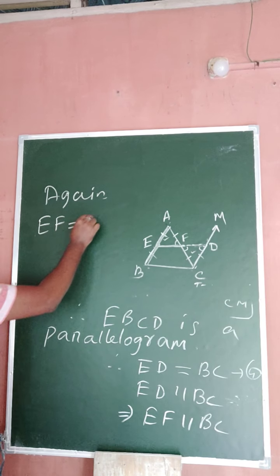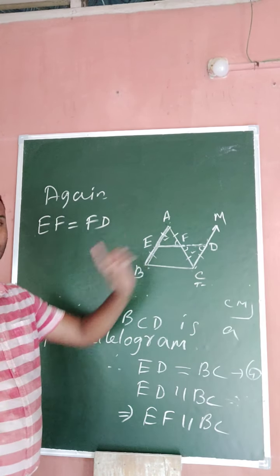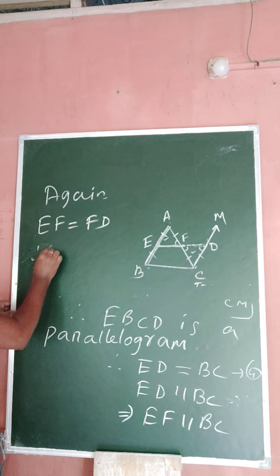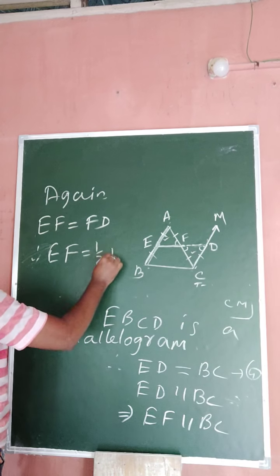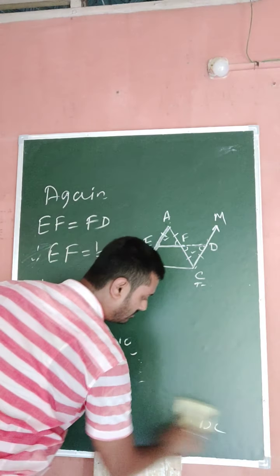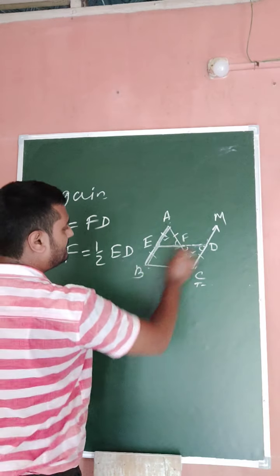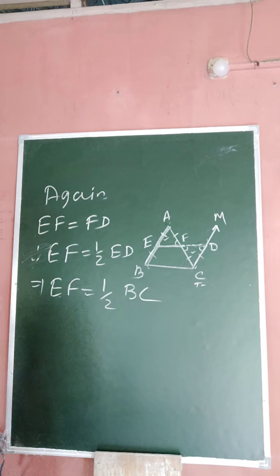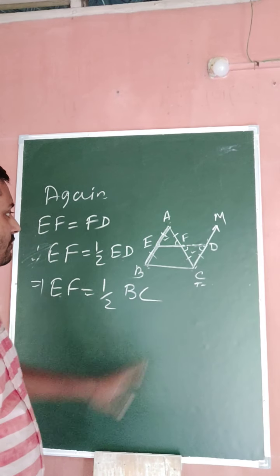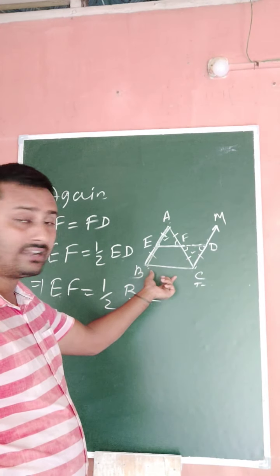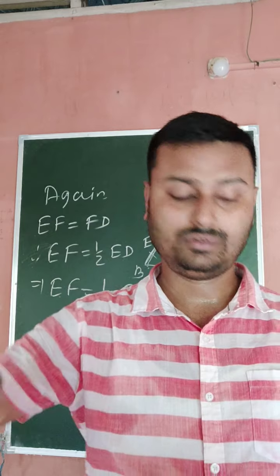We already proved EF equals FD, so EF equals half of ED. But ED equals BC, so EF equals half of BC. Therefore, the line segment joining the two midpoints of two sides of a triangle is parallel to the third side and equal to half of it. Next class, we will start Theorem 8.10. Thank you, bye.